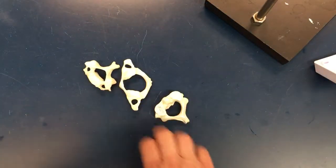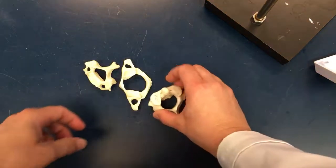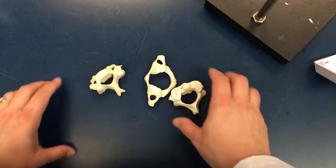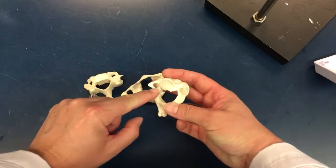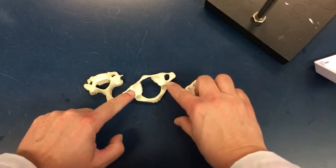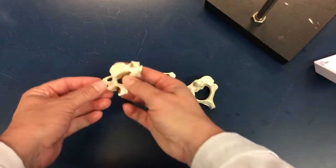Moving over to the cervical vertebrae, you can see that those look much different than the other two, the lumbar and the thoracic. Specifically, something that you may notice are these holes on either side that are only found on cervical vertebrae.